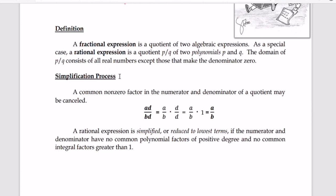Here is the simplification process. A common non-zero factor in the numerator and denominator of a quotient may be cancelled. So if we have ad divided by bd, we can separate it as a over b times d over d. Since d over d equals 1, our final answer is a over b. A rational expression is simplified or reduced to lowest terms if the numerator and denominator have no common polynomial factors of positive degree and no common integral factors greater than 1.